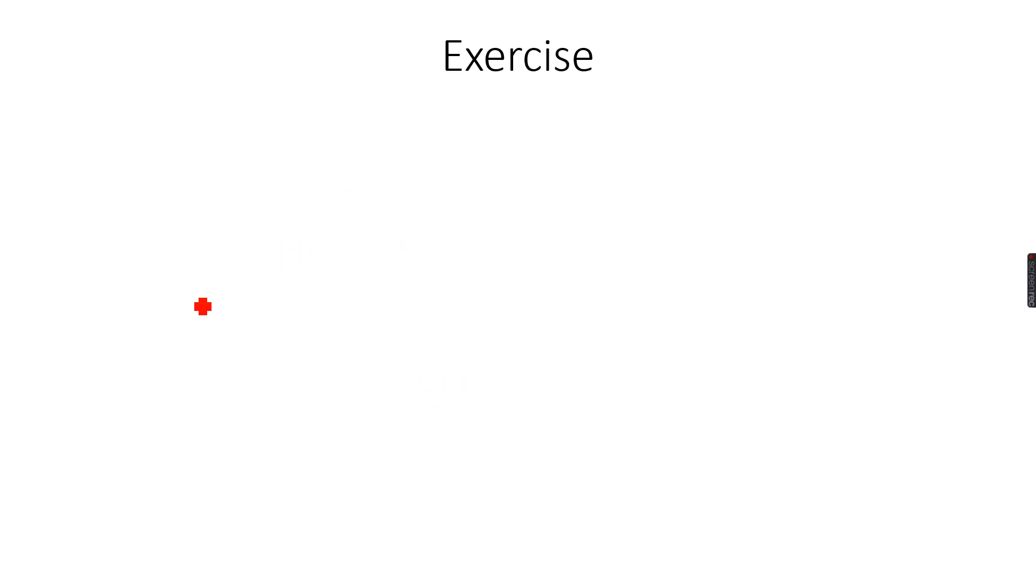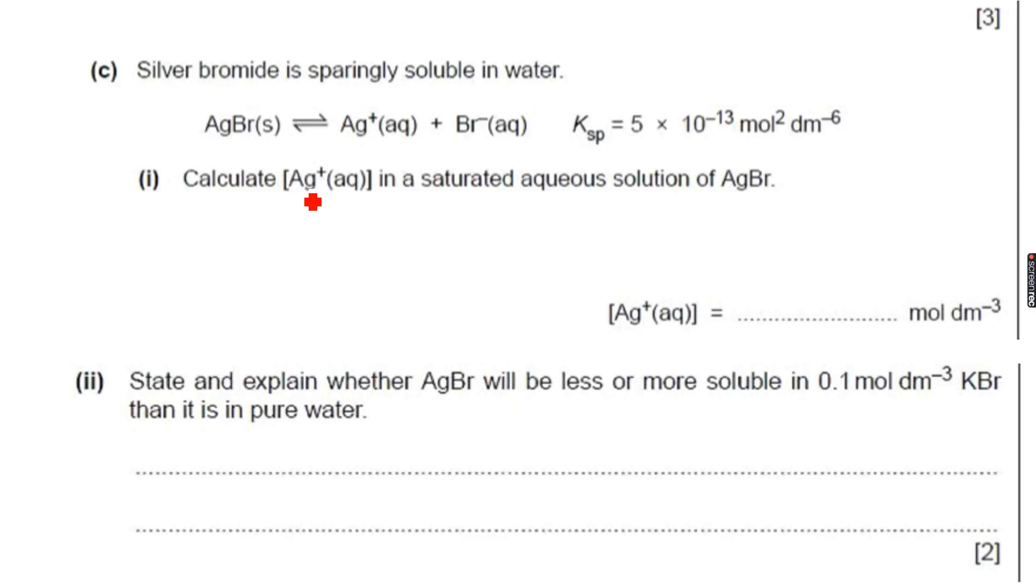Now we will do an exercise on the common ion effect and on solubility products. Silver bromide is sparingly soluble in water, and we can see AgBr solid gives Ag plus aqueous plus Br negative aqueous, and the solubility product is this. You can see it's such a low value, so you can see how insoluble AgBr is. It says calculate Ag plus aqueous in a saturated solution of AgBr.